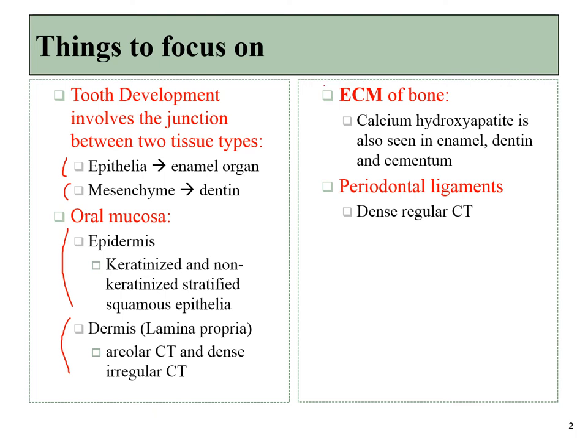One of the other connective tissues we would like to focus on is bone tissue. We're going to be interested in the maxilla and mandible, but we're also going to be interested in the extracellular matrix of bone tissue because it is very similar to enamel, dentin, and cementum. And lastly, we can pay attention to the periodontal ligaments, which are similar to any other ligaments in the body, being composed of dense regular connective tissue.